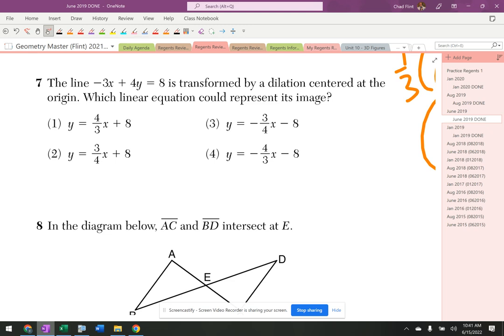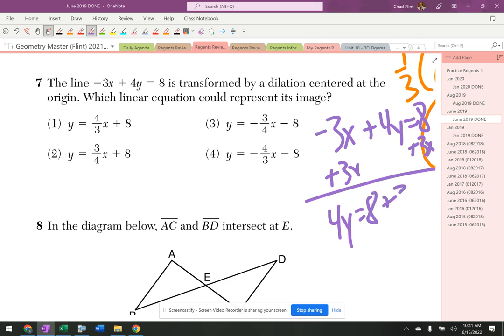Now it doesn't tell me what the scale factor is. This is kind of a weird question, but I need to solve this for y equals anyways. So negative 3x plus 4y equals 8 plus 3x plus 3x. I'm going to get 4y equals 8 plus 3x.